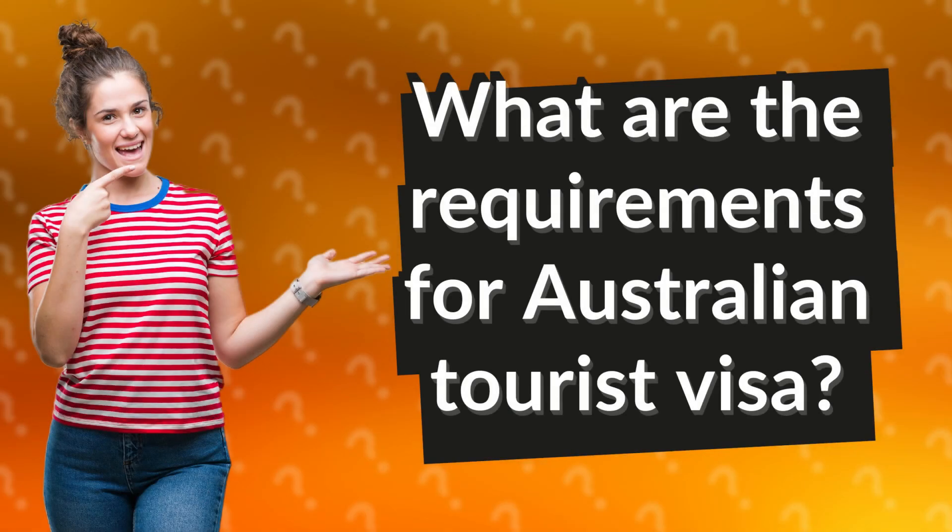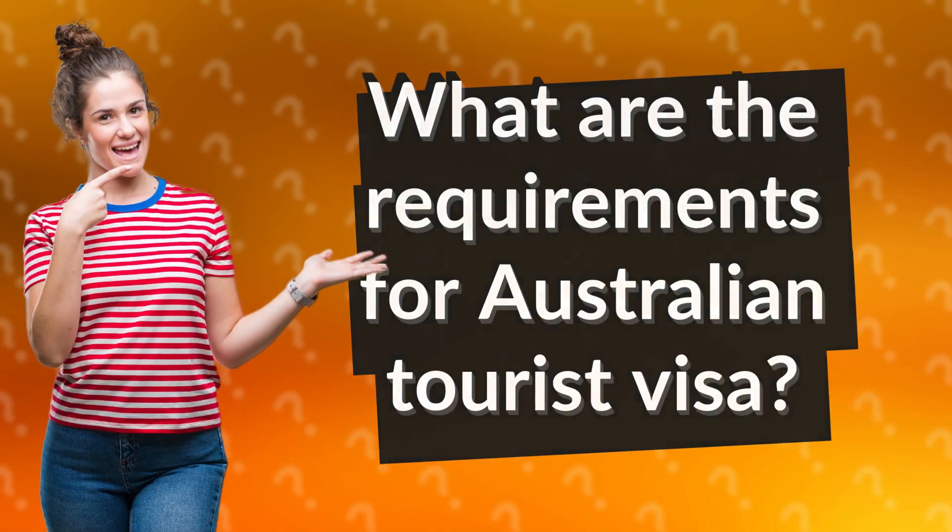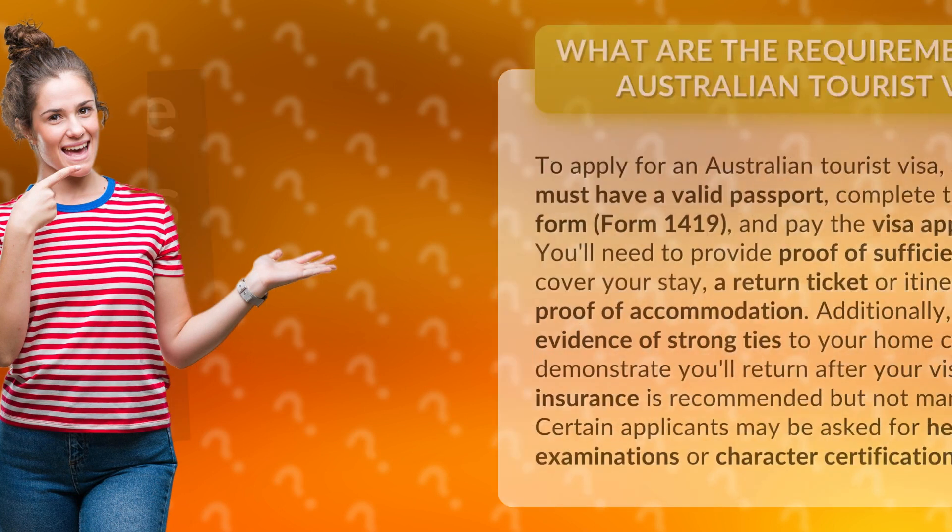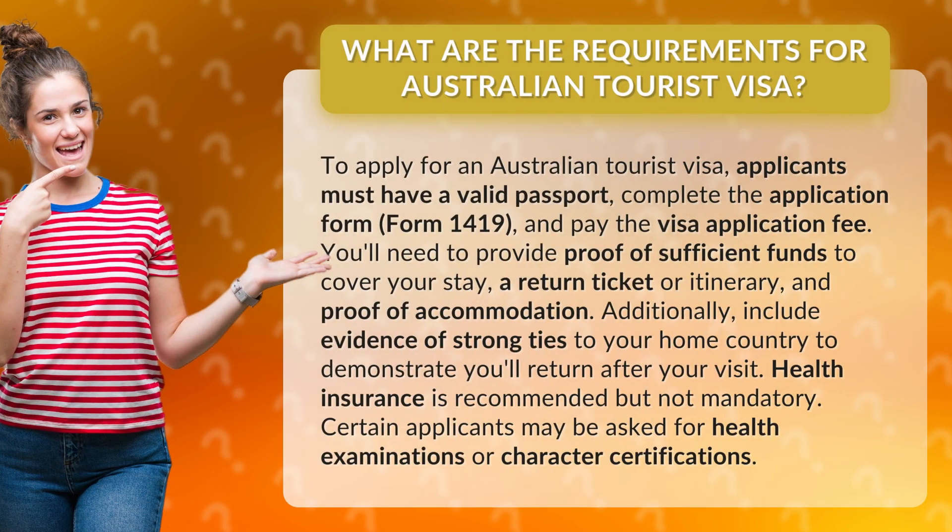What are the requirements for Australian Tourist Visa? To apply for an Australian Tourist Visa, applicants must have a valid passport, complete the application form, Form 1419, and pay the visa application fee.